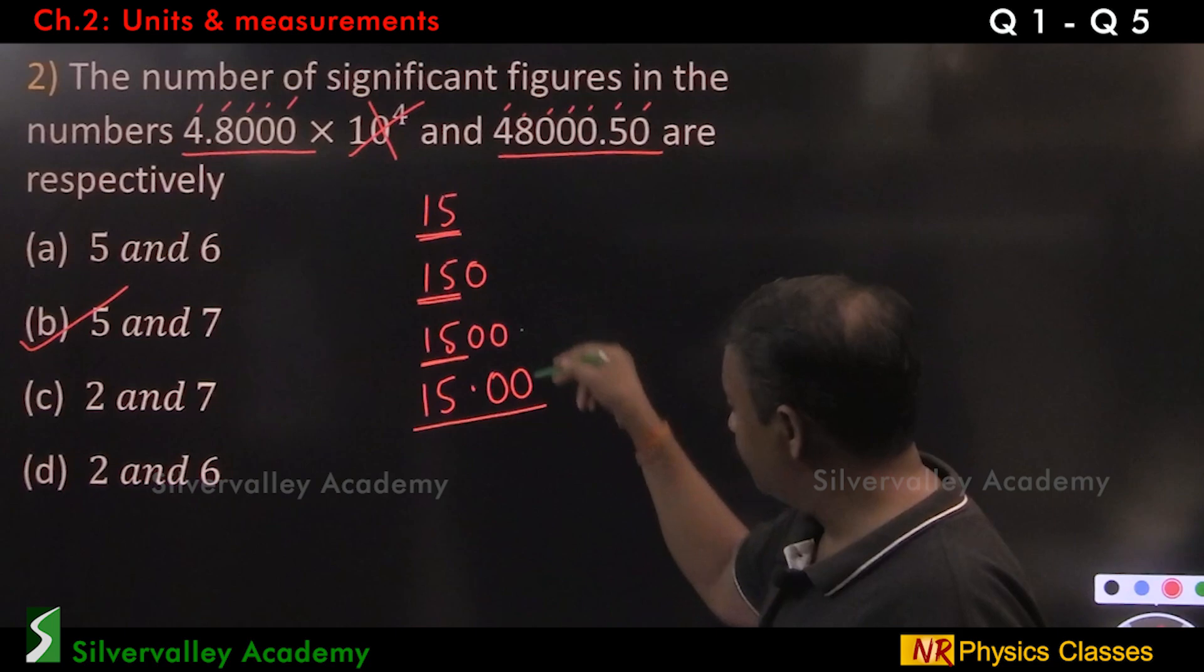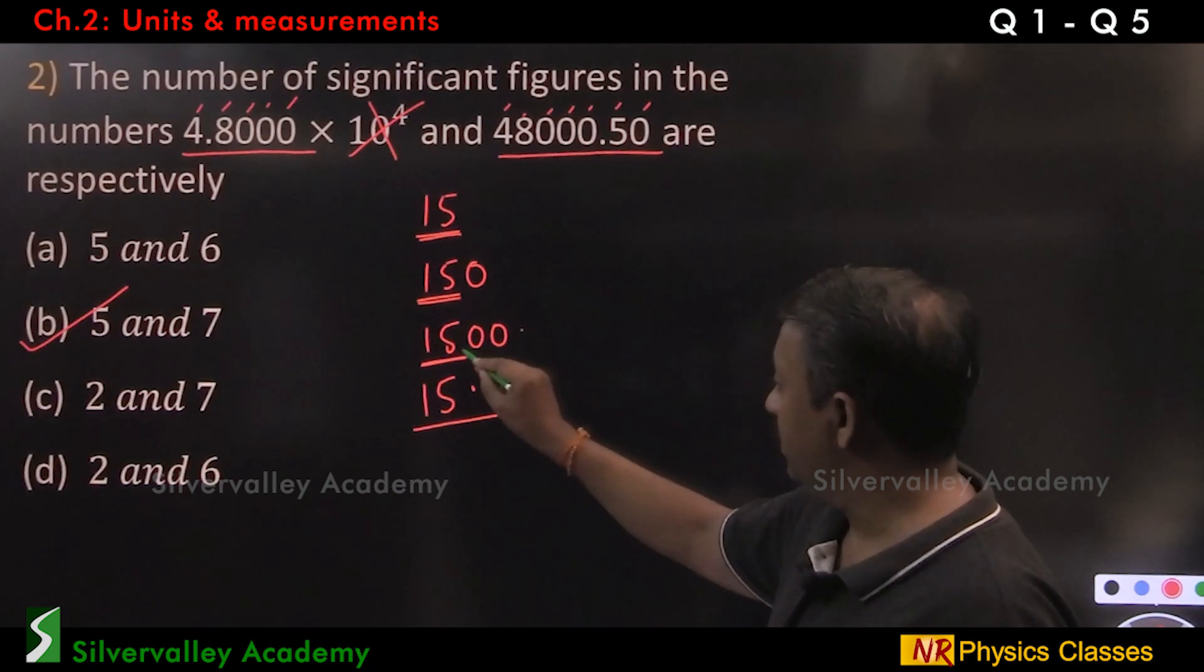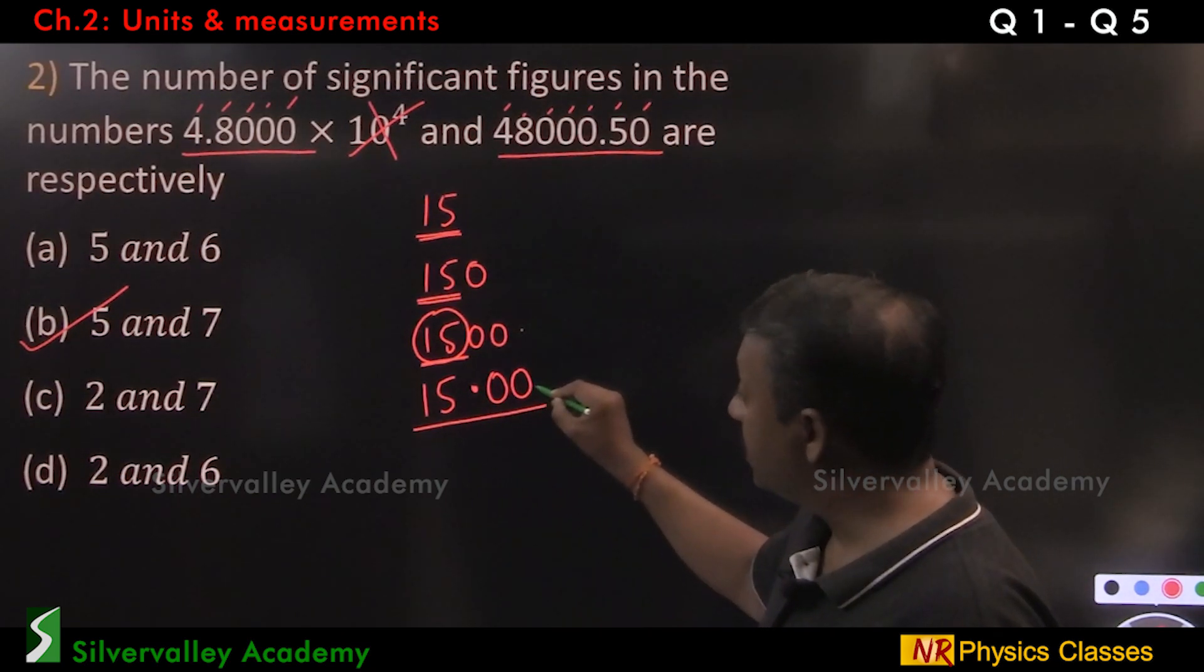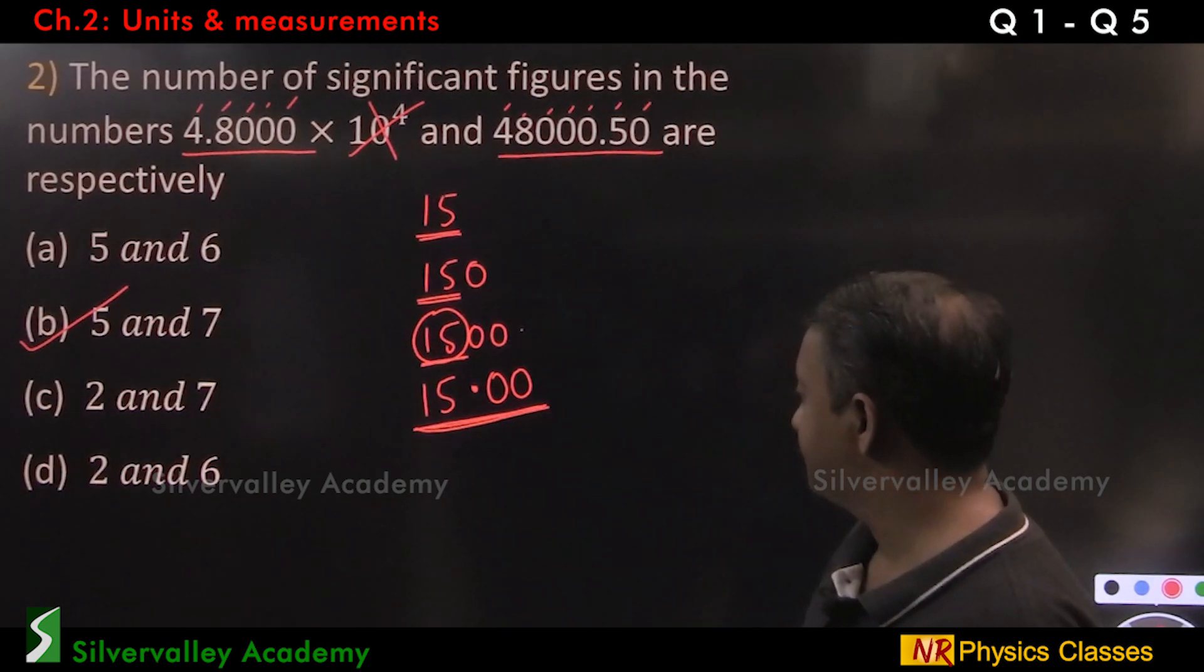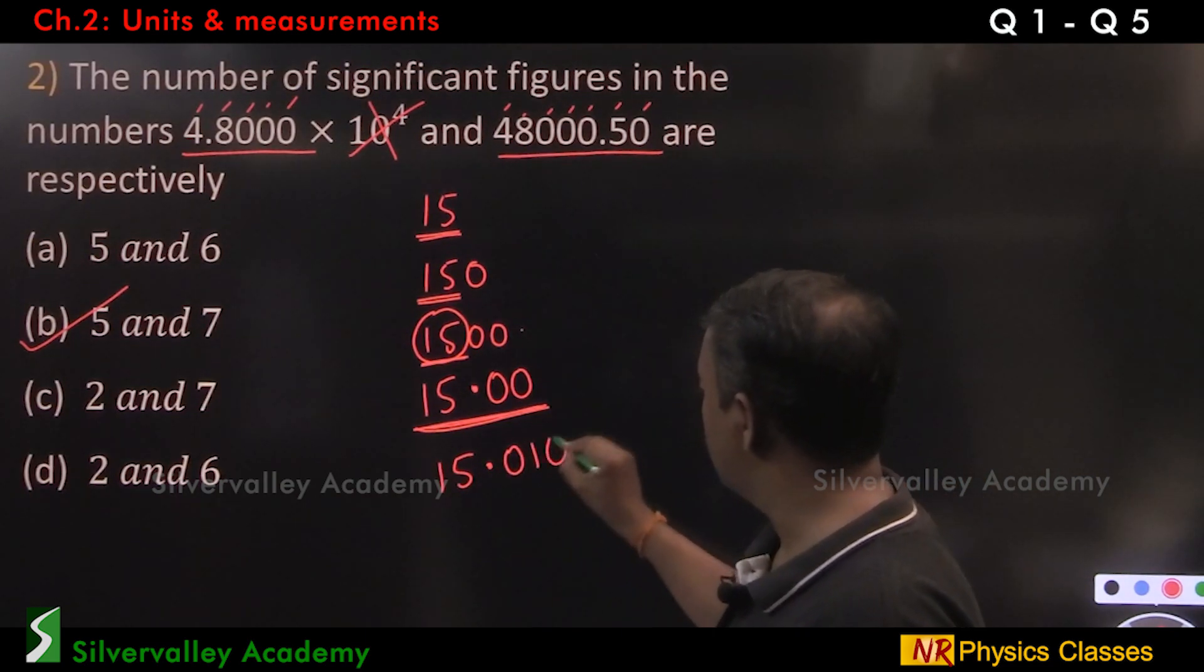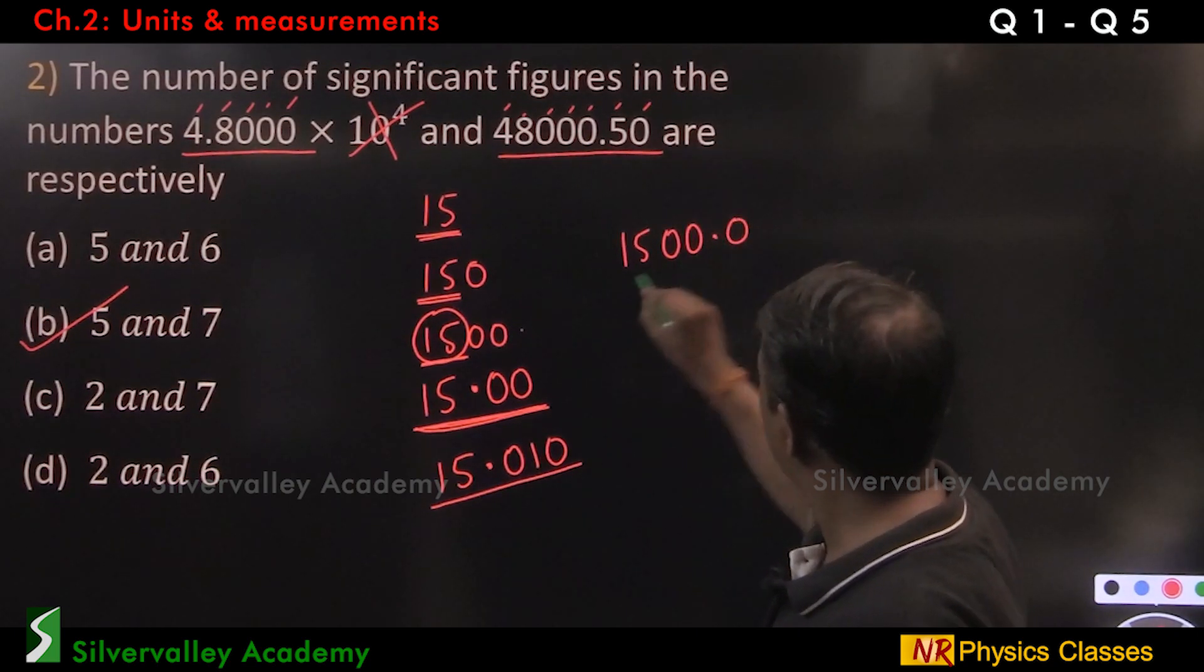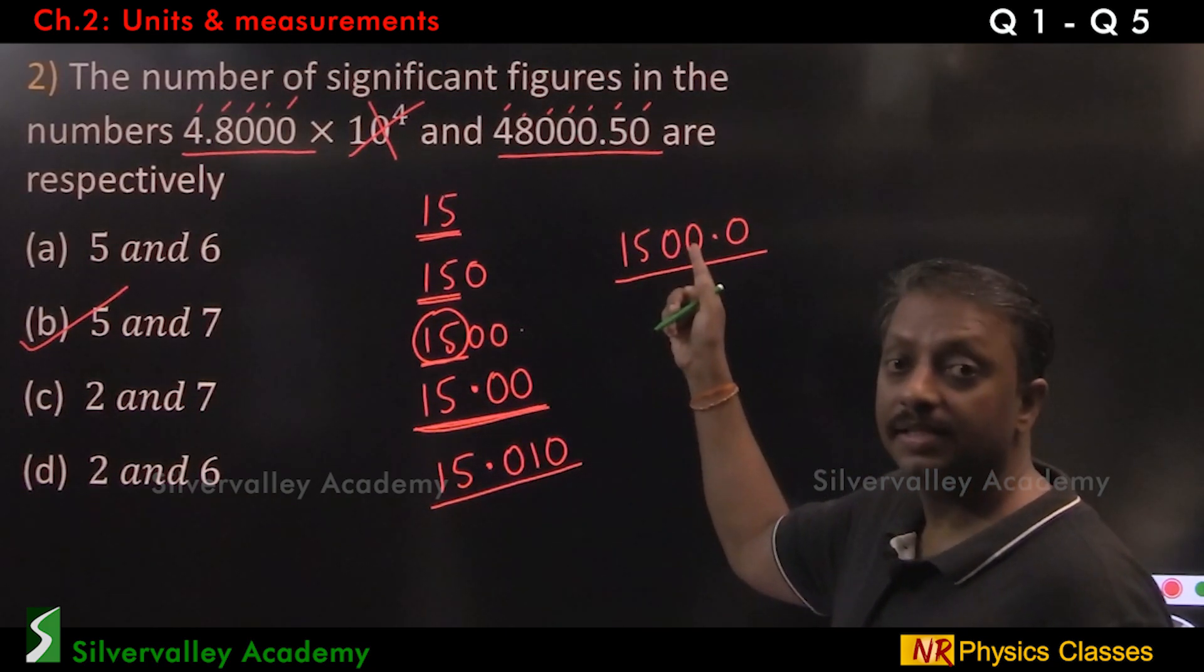1, 5, 0, 0. All these four are significant. Observe these two. These two zeros are after non-zero digits. Therefore, these two are insignificant. We have to count only these two. After decimal point, if we have numbers, then these two are significant. Underlined digits are significant.